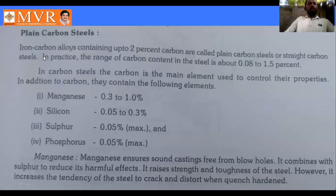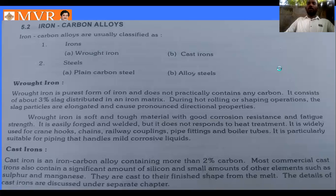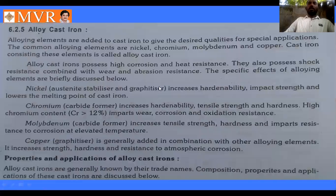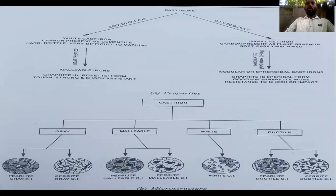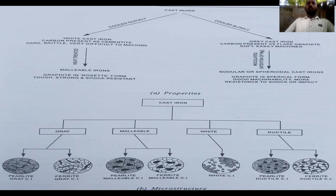Today's topic, plain carbon steel, follows our previous discussion on cast iron. Iron is widely used in construction, domestic, and architectural applications. Cast iron is generally classified into four types: white cast iron, gray cast iron, malleable cast iron, and nodular (or ductile) cast iron. We mainly discuss these four types, though other types exist.